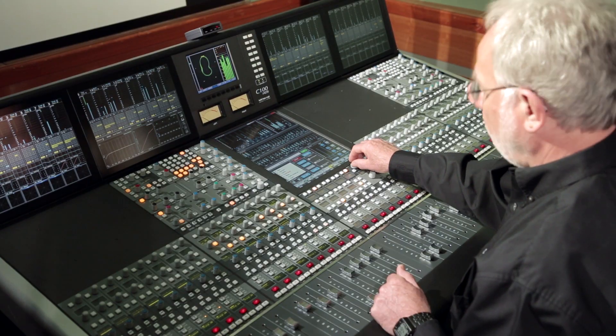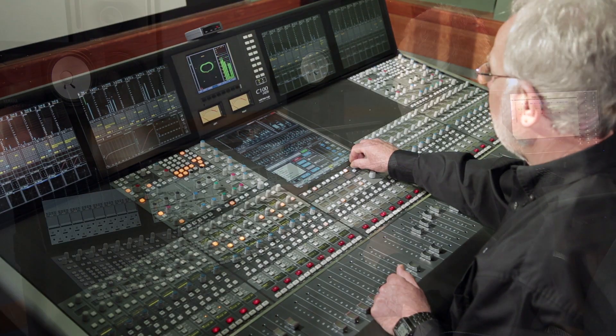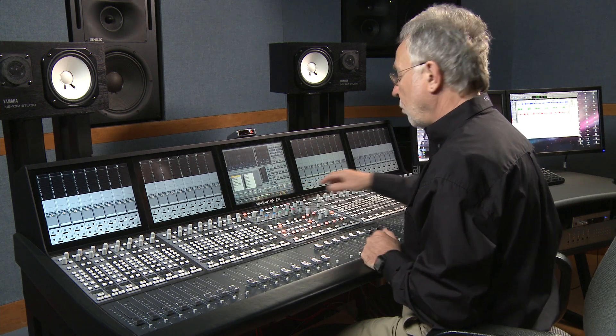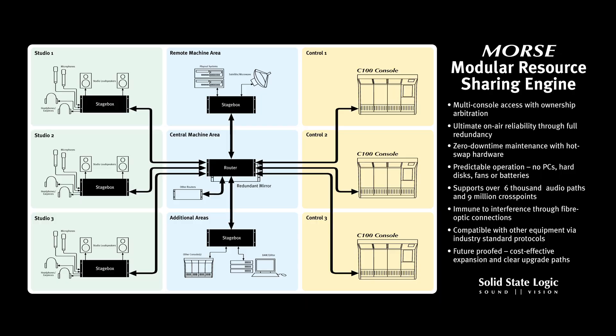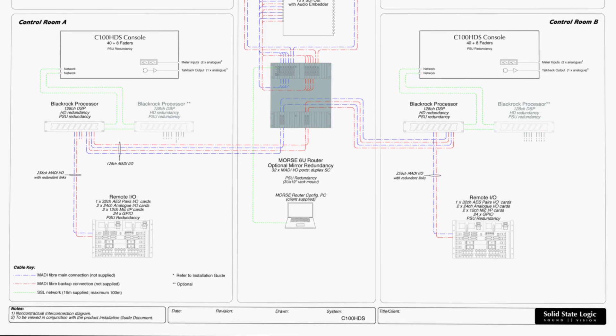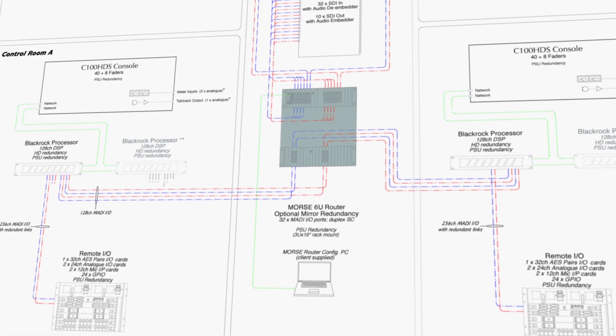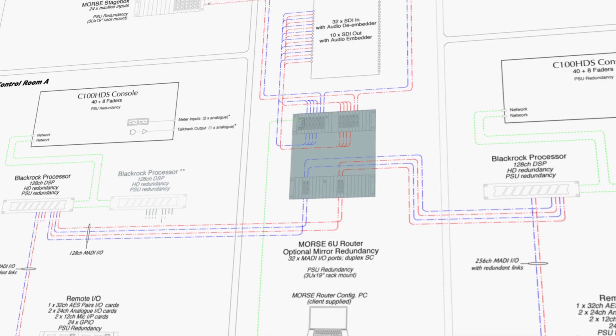SSL has provided multiple integrated audio systems for many broadcast clients. The C100 and C10 share many operational features, so moving from one console to another in a multi-room facility is easy and intuitive. The Morse router enables I/O resource sharing across multiple consoles, with Stage Box and other I/O accessible from each console in larger multi-studio facilities. SSL can help design a fully integrated system for your multi-room facility that fits your budget and your operational requirements.